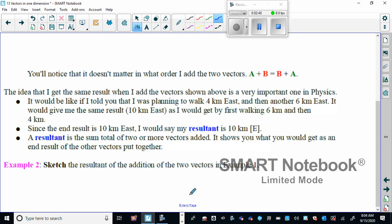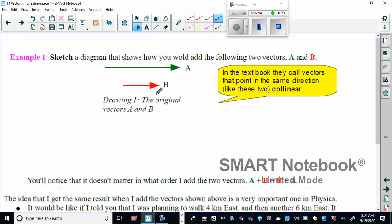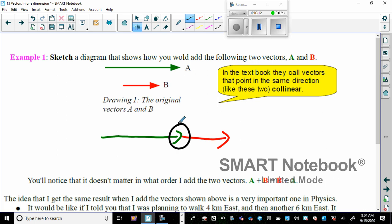So we're going to kind of skip this as number two. Sketch the resultant of the addition of two vectors in example one. So in example one we're going to place them tip to tail. There's A, there's B. So you can see it's tip to tail, right here, tip to tail. And then the resultant goes from tail to tail, tip to tip.